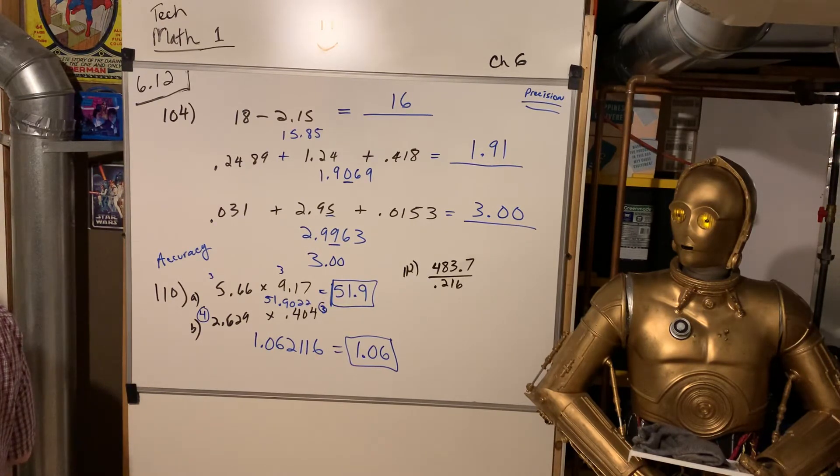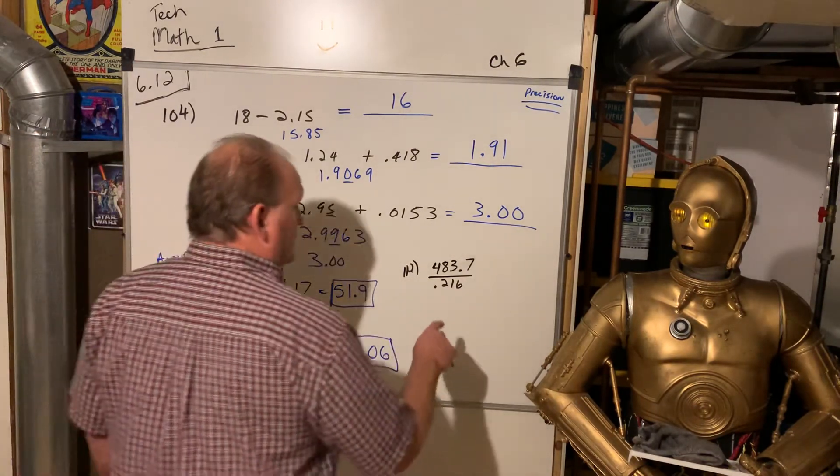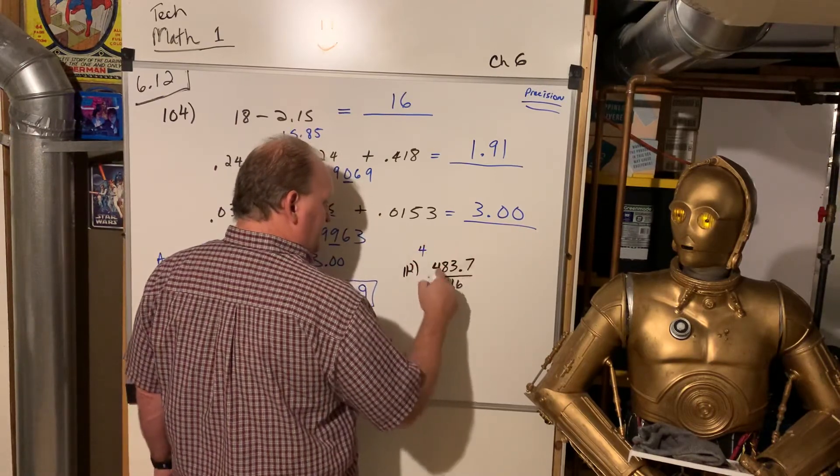All right, and then I wanted to do 1.12 and just D, just letter D. So, again, look, I've got 1, 2, 3, 4 significant digits on the numerator,